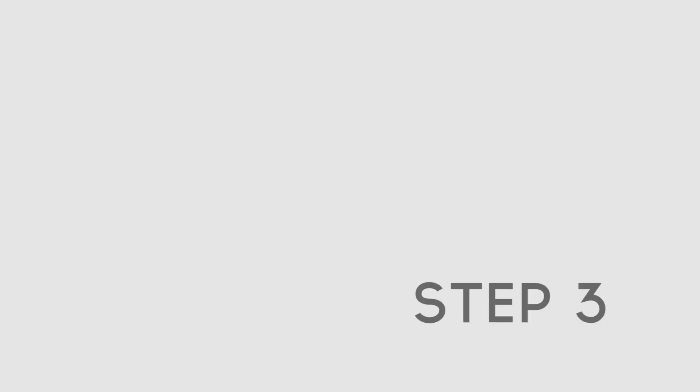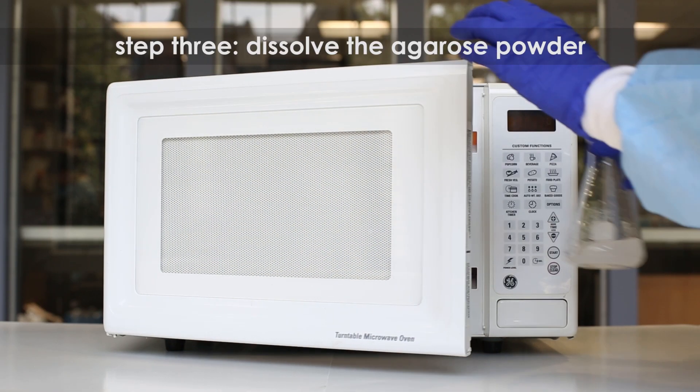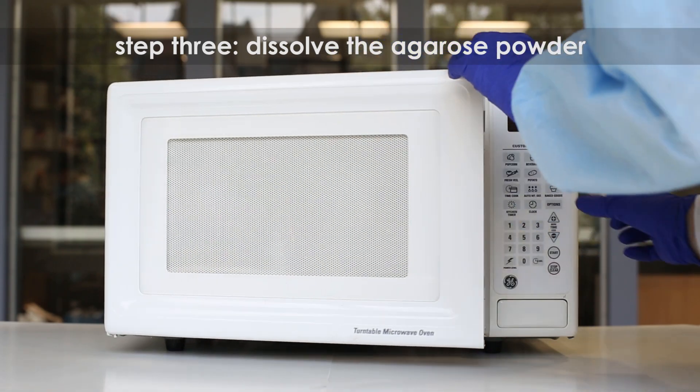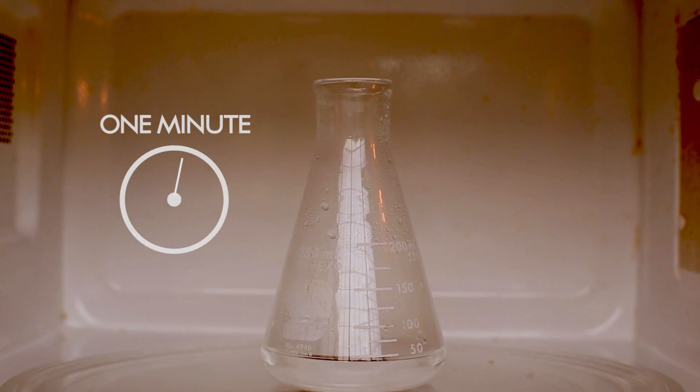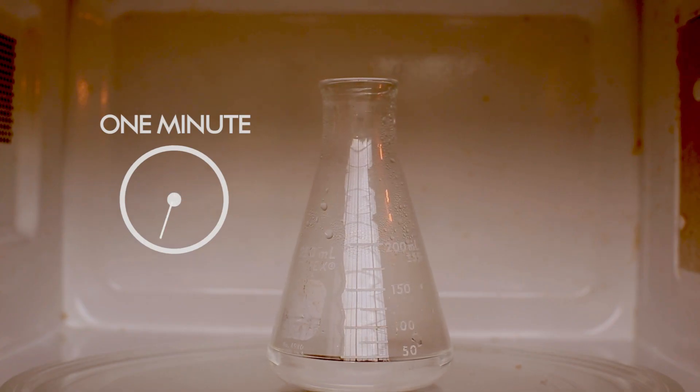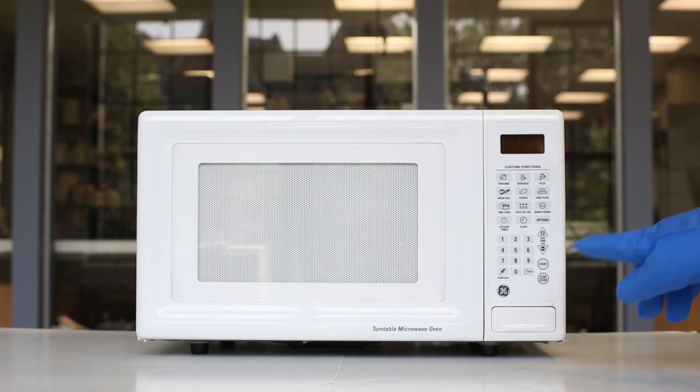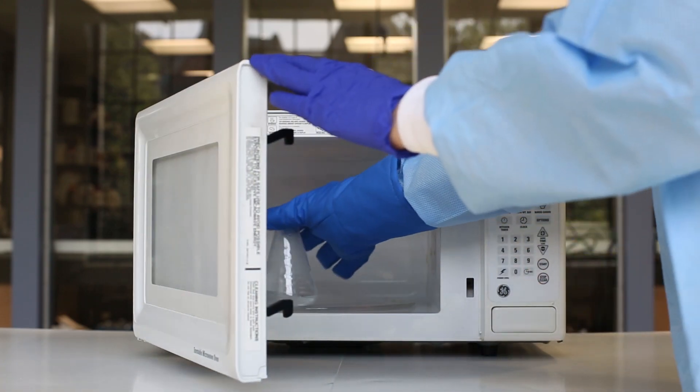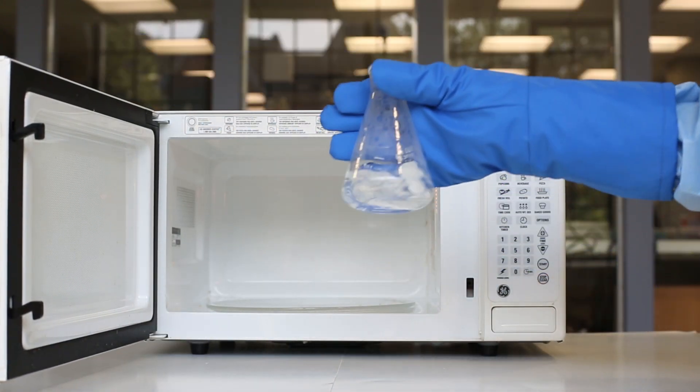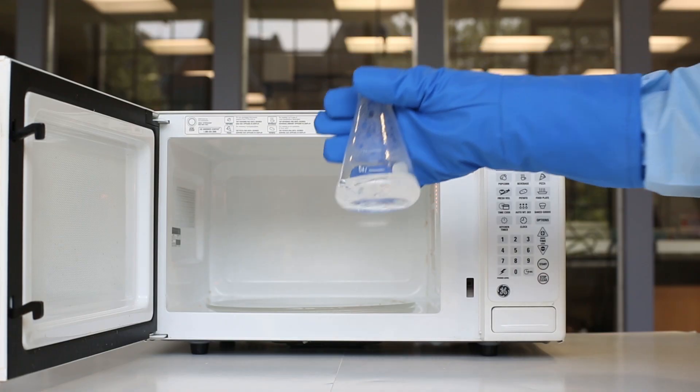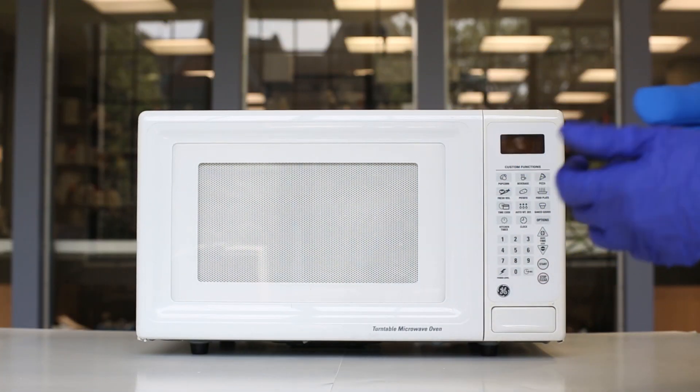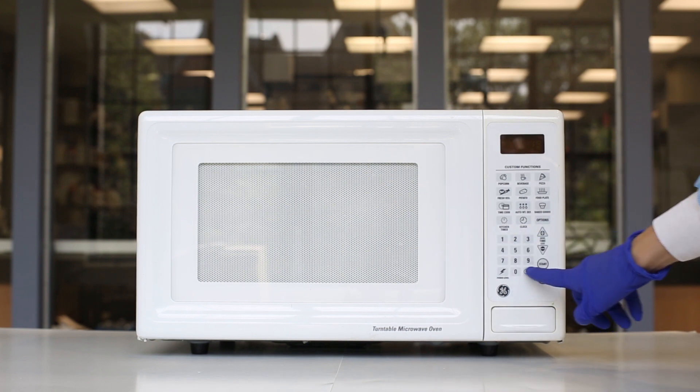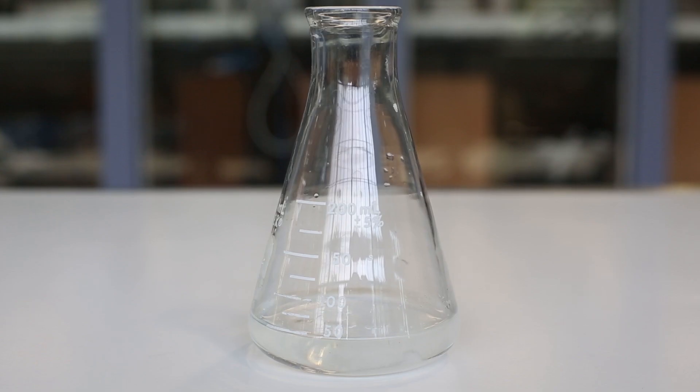Step 3. Dissolve the Agarose Powder by boiling the solution. Microwave the solution on high for 1 minute. Carefully remove the flask from the microwave and mix by swirling. Continue to heat the solution in 15-second bursts until the Agarose is completely dissolved. The solution should look clear like water.